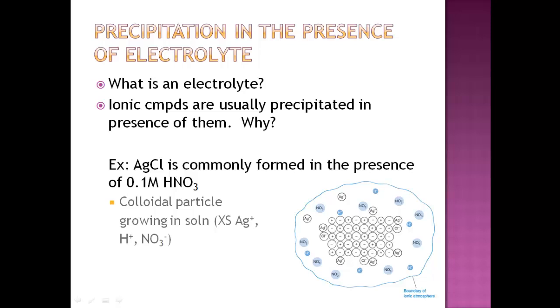First things first, what is an electrolyte? You should have heard this in general chemistry. Electrolyte is a compound that will dissociate into ions when it's actually dissolved. Ionic compounds are usually precipitated in the presence of an added electrolyte. Why is that? And we're going to learn about why that is.